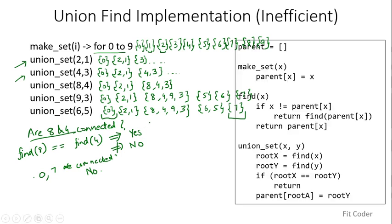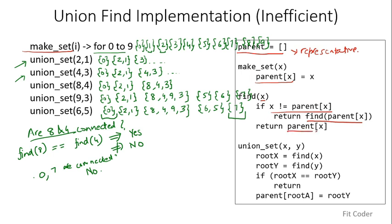For a simple implementation of union find, we keep a parent array storing the parent of all nodes — parent can be thought of as representative. In make_set, we initialize the parent array so each node is the parent of itself. In the find function, we check if the node is its own parent; if not, we recursively call find on its parent until we reach the root where a node is its own parent. In union_set for x and y, we find root_x and root_y; if equal they are already in the same set, otherwise we make root_y the parent of root_x.